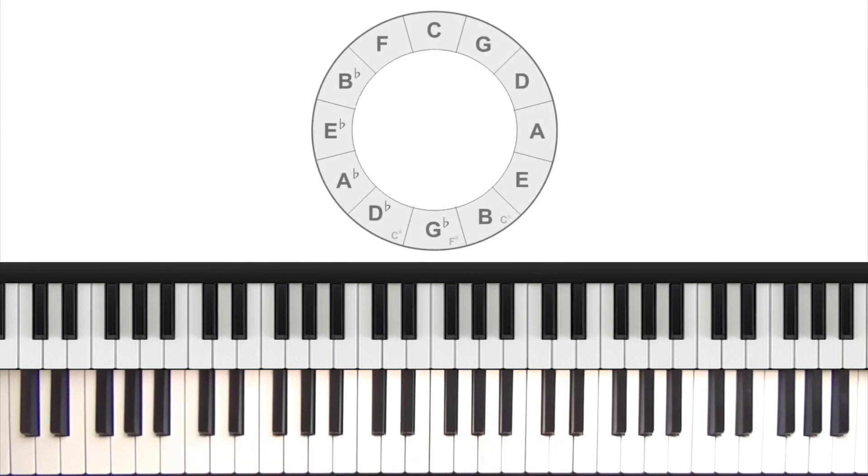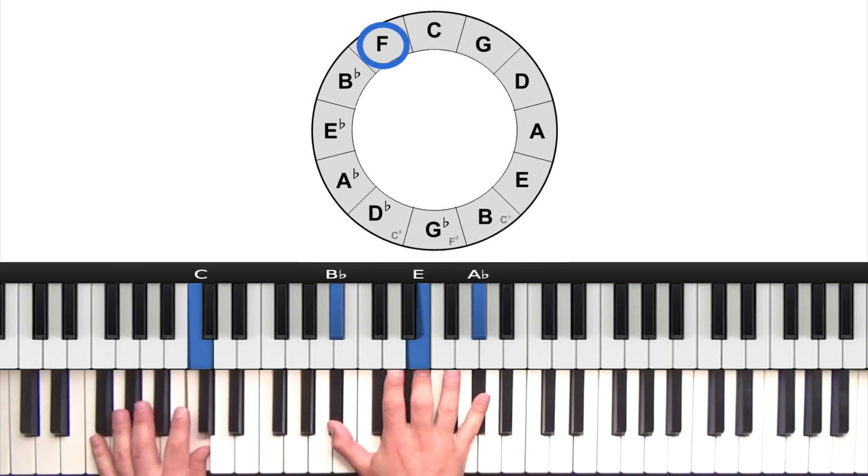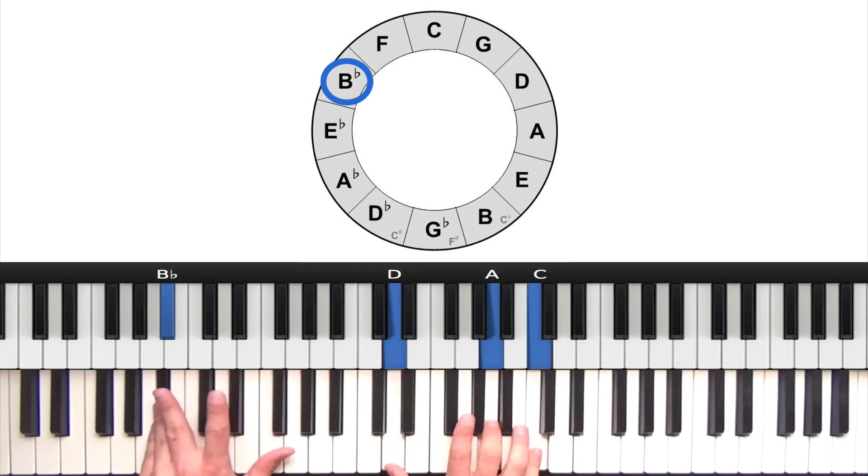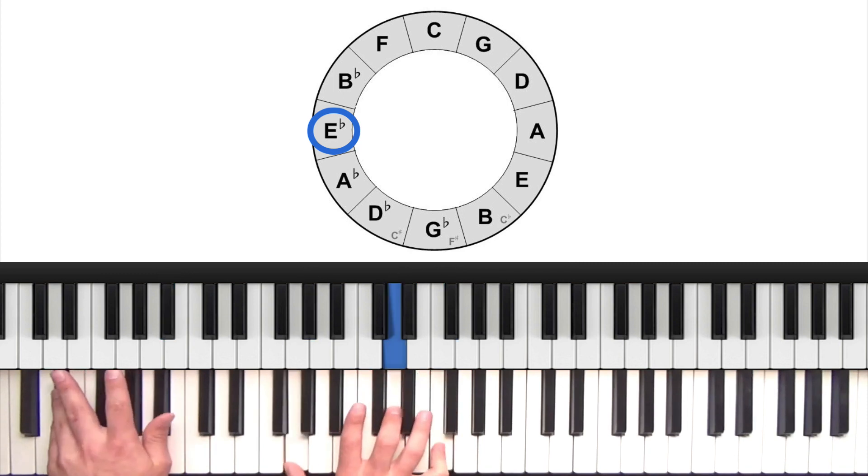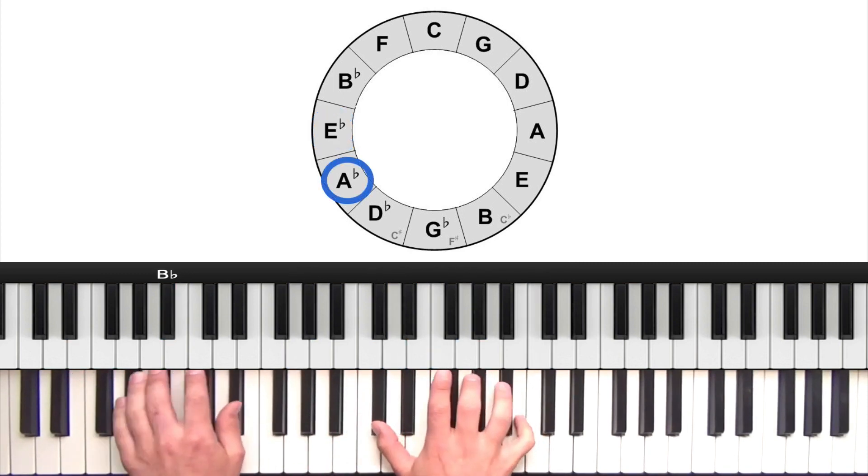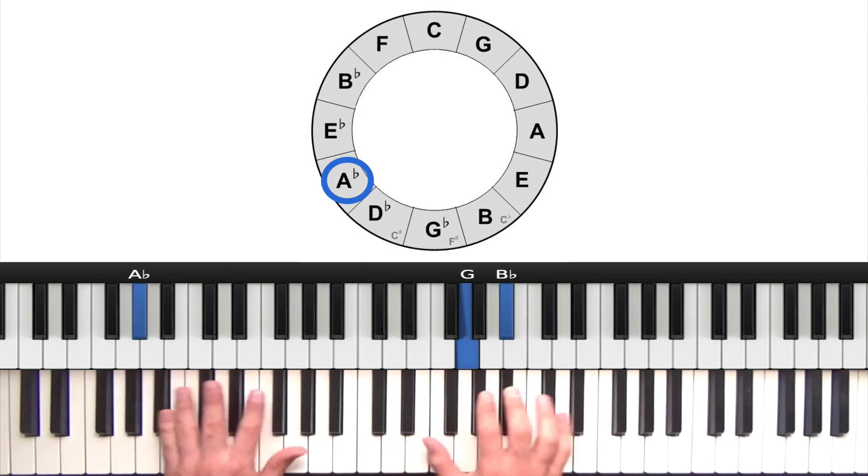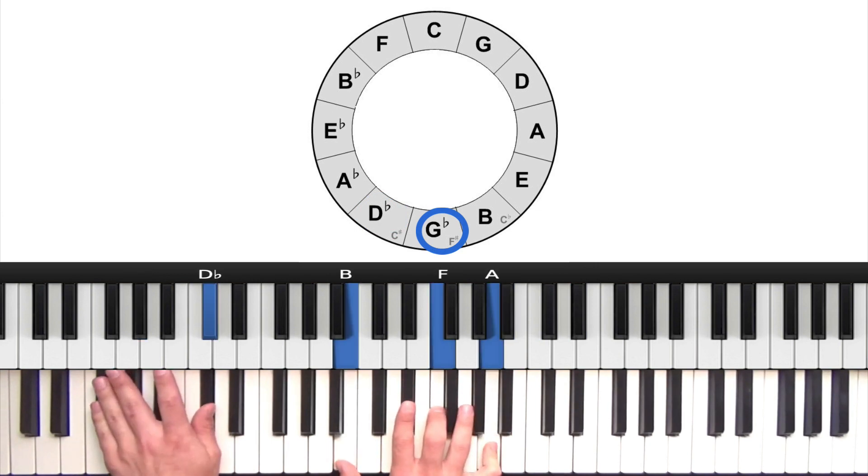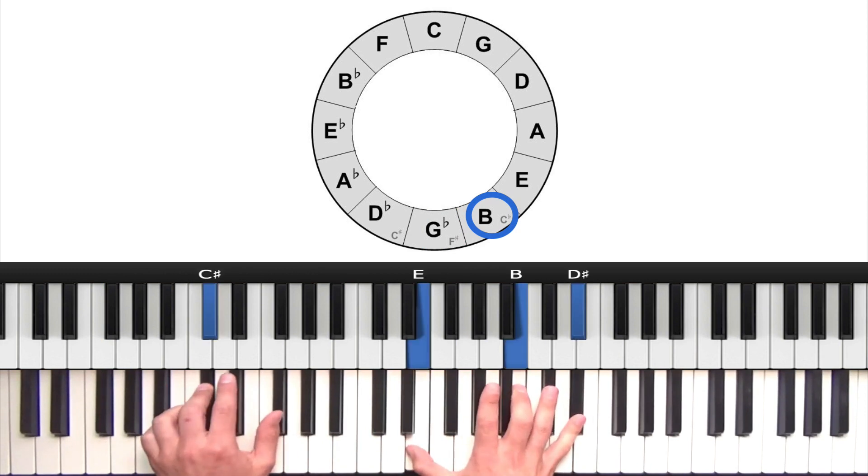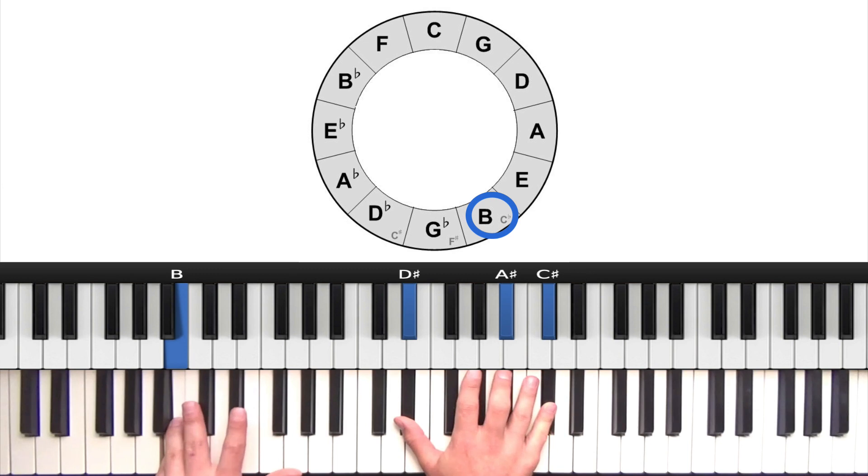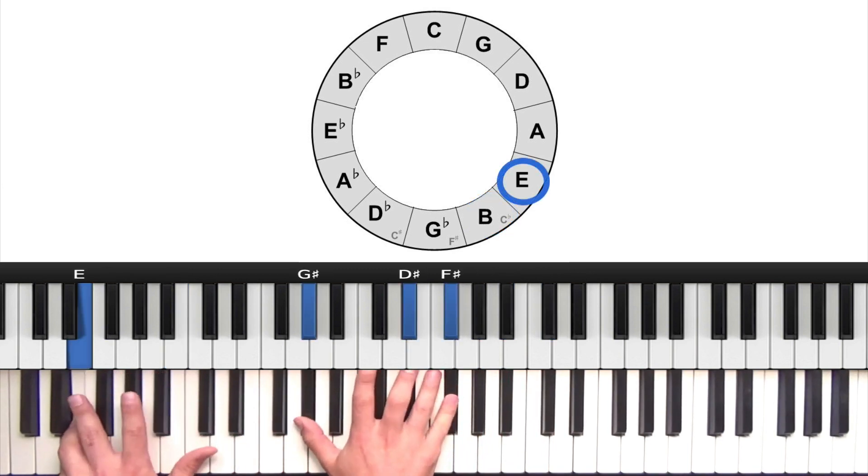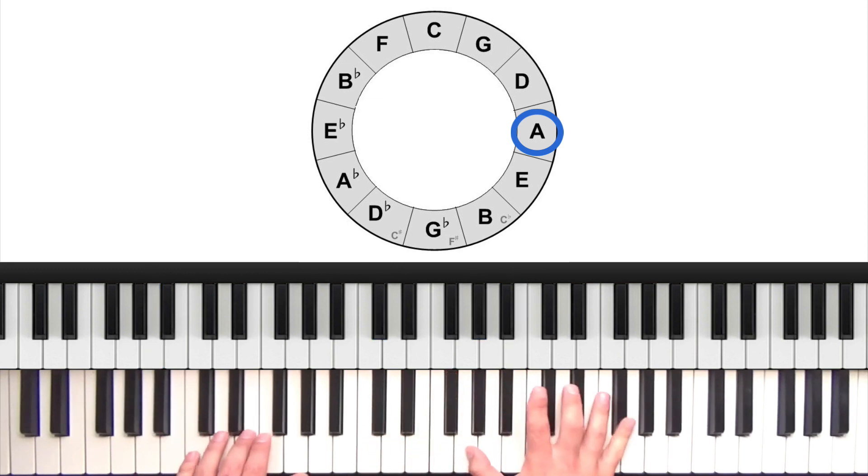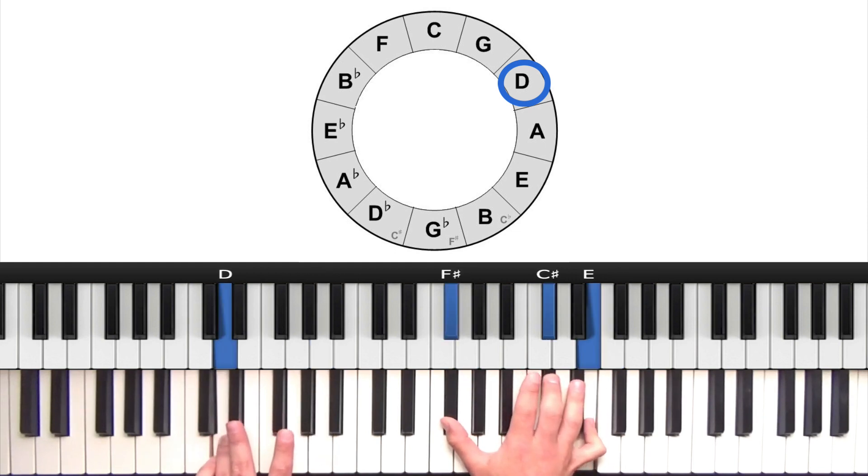Let's take that around all 12 keys. So next in the key of F - C7 sharp 5, F major. In the key of B flat. In the key of E flat. In the key of A flat. In the key of D flat. In the key of G flat. In the key of B. In the key of E. In the key of A. In the key of D. In the key of G is the final one.